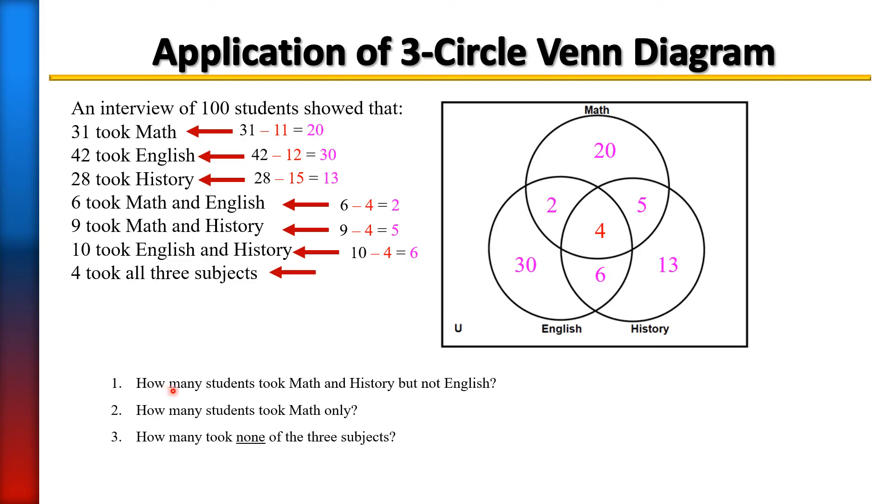Let's go ahead and answer some of these questions. How many students took math and history, but not English? Let's look at the two-circle region of math and history. This area here is math and history, but not English, so that would be the 5.